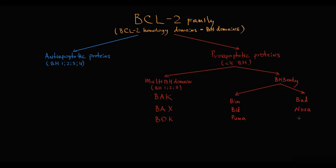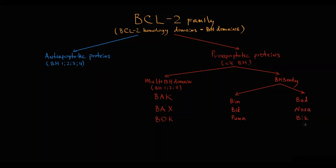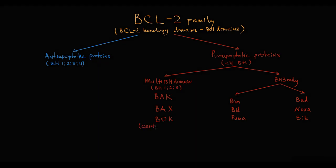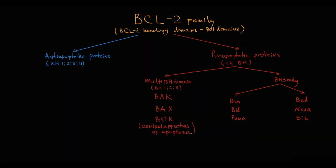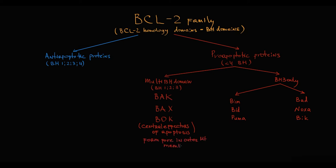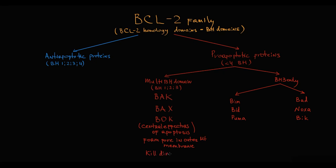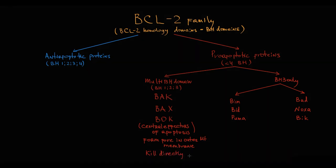The major difference between multi-domain and BH3-only proteins is that multi-domain proteins, such as BAX and BAK, are the central effectors of apoptosis. Once activated, they undergo conformational changes, oligomerize, and form pores in the outer mitochondrial membrane — directly causing mitochondrial outer membrane permeabilization. So once they are activated, they kill mitochondria directly and thereby directly induce apoptosis.